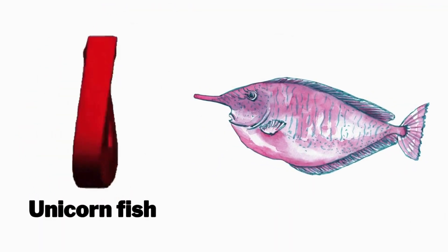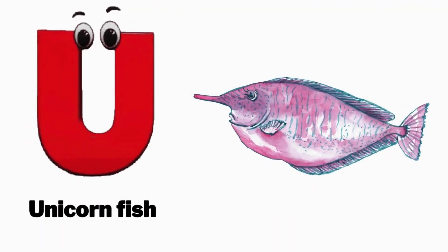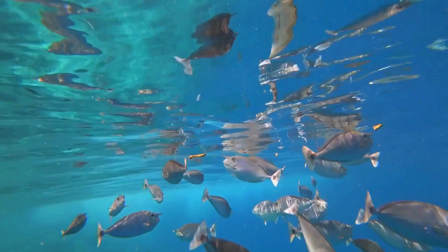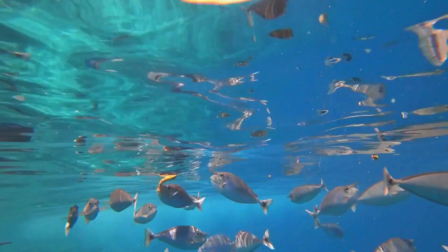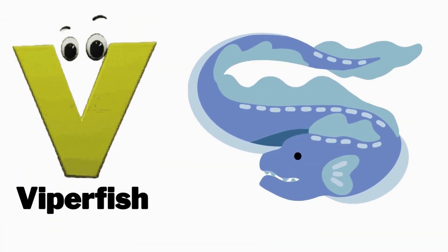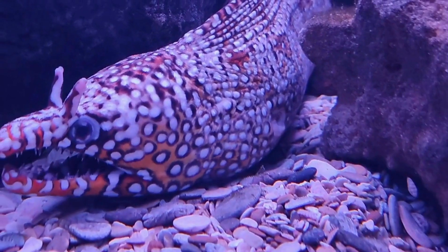U is for unicorn fish, U, U, unicorn fish. V is for viperfish, V, viperfish.